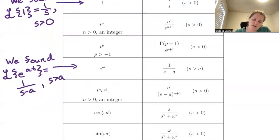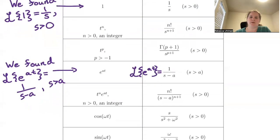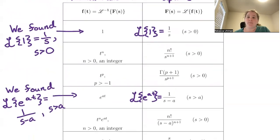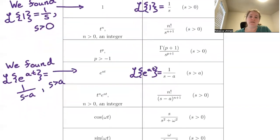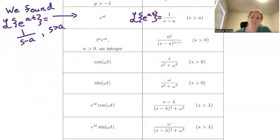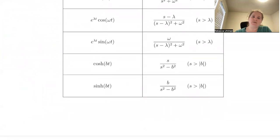So essentially, the Laplace transform of e to the at is equal to 1 over s minus a, and the Laplace transform of 1 is equal to 1 over s. I'm not going to go through and prove all of these various Laplace transforms, but there are a variety which are considered standard ones to take.